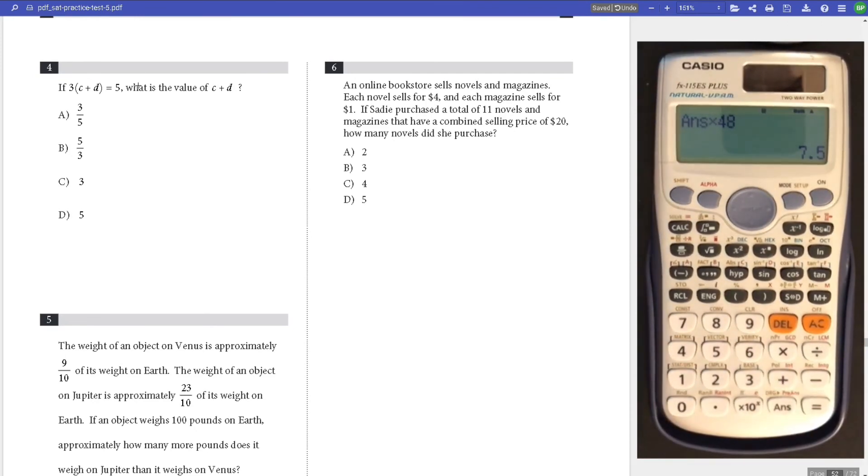Number 4, if 3C plus T equals 5, what is the value of C? Divide by 3 on both sides, you get 5 thirds. Answer B.